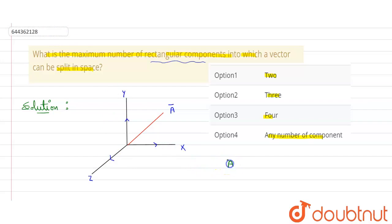Suppose this is a vector A. So it can be written as Ax i-axis, plus Ay j-axis, plus Az component with k-axis. This is the general form of writing a vector.